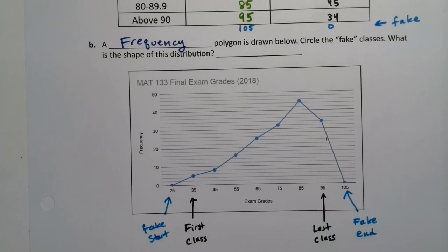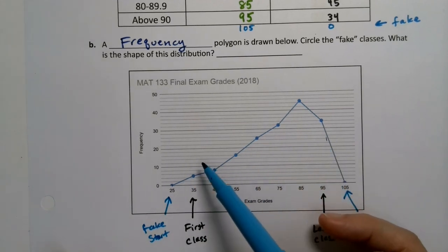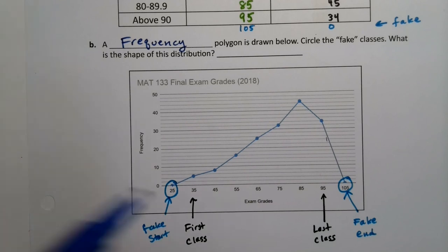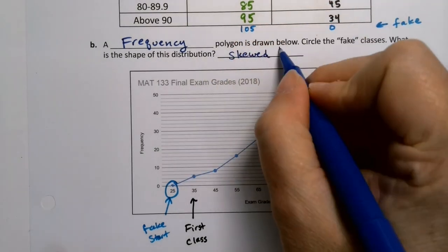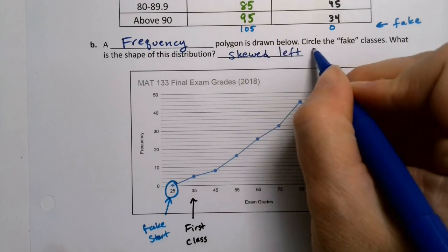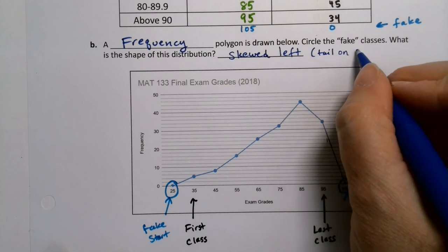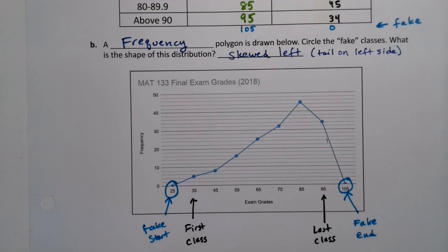Now, one last question is, what is the shape of this distribution? Well, it has a tail over here to the left. So that would be skewed left, or negatively skewed, because it has a tail over there on the left side.